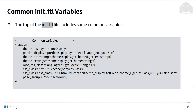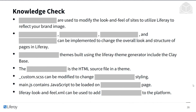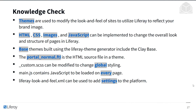Some of the common init.ftl variables are included at the top of the init.ftl files. You might see theme_display, which is commonly used because it holds pertinent current information about the page. You also have theme settings and CSS classes, which are useful for knowing how a current element is styled. For the knowledge check: themes modify the look and feel of sites to reflect your brand. HTML, CSS, images, and JavaScript can change the overall look and structure of pages. Base themes include the Clay base. Portal Normal FTL is the HTML source file, custom.scss handles global styling, main.js loads JavaScript on every page, and Liferay look-and-feel XML adds settings to the platform.